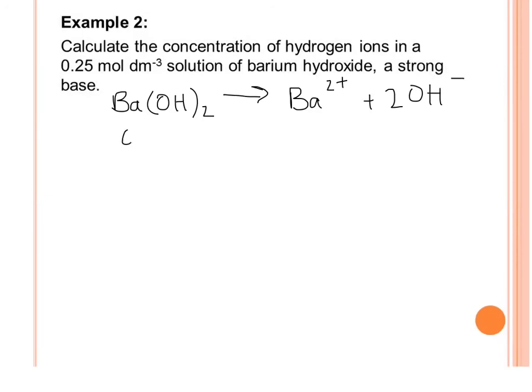If we start with 0.25 mol/dm³ of Ba(OH)₂ and completely dissociate it, we would be left with 0.25 mol/dm³ of Ba²⁺ and twice the amount of OH⁻. So we have the concentration of OH⁻.